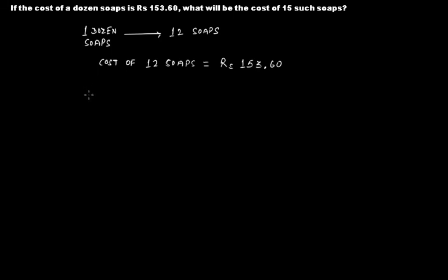If we apply the unitary method, then we need to first find out the cost of one soap. And what will be the way to find the cost of one soap? You remember, we discussed this unitary method in our introduction to unitary method video. So using the same concept, the cost of one soap will be what?